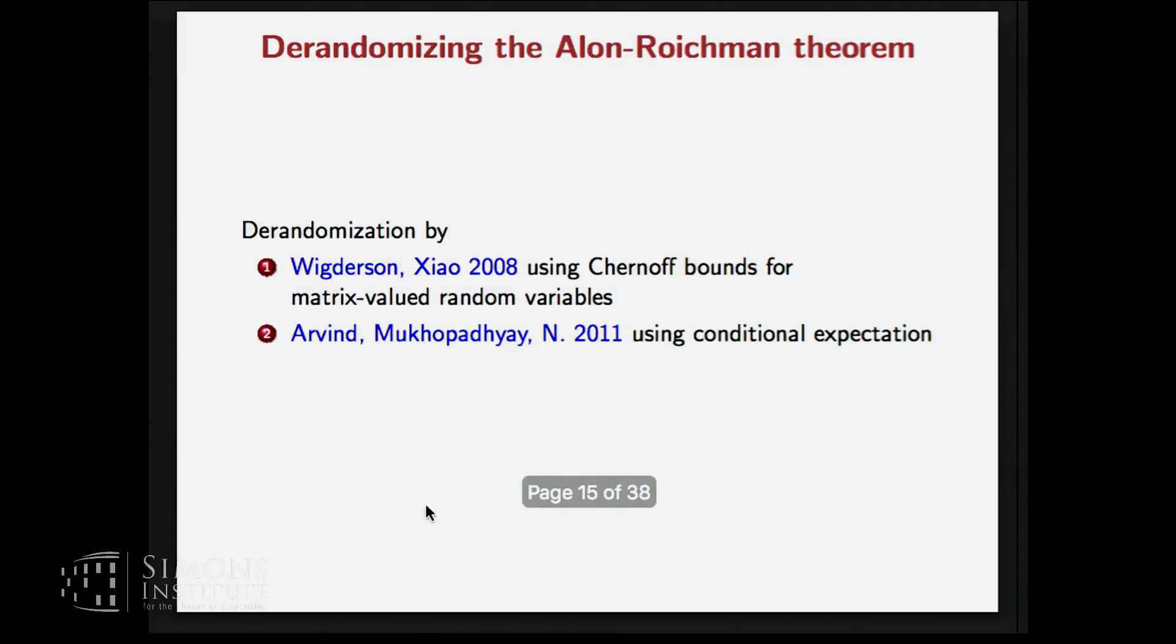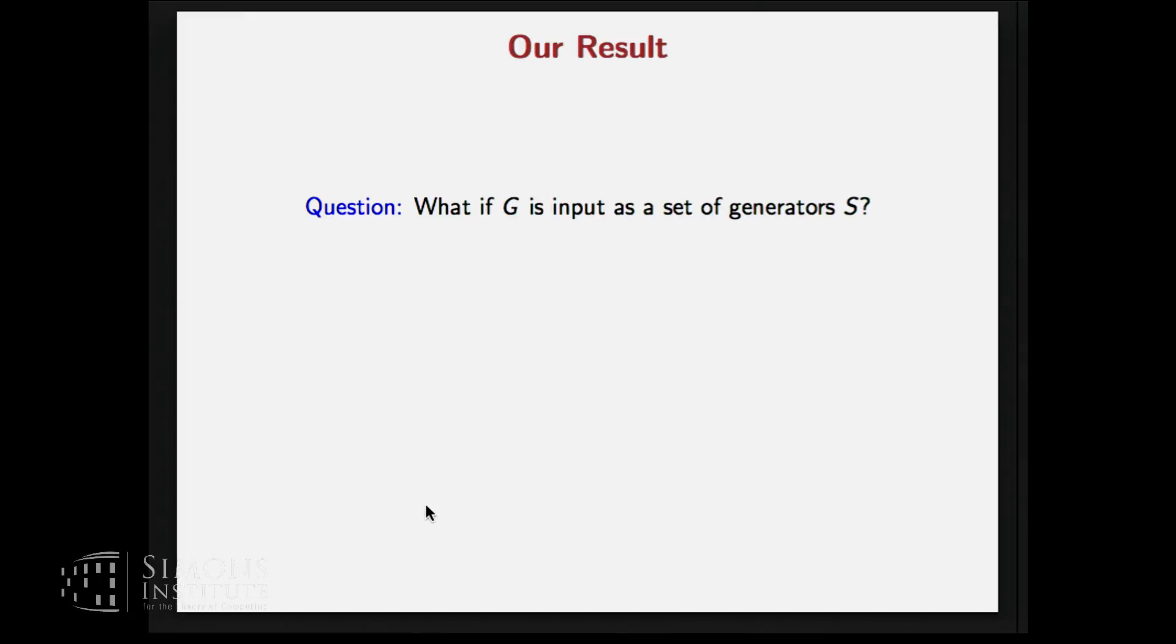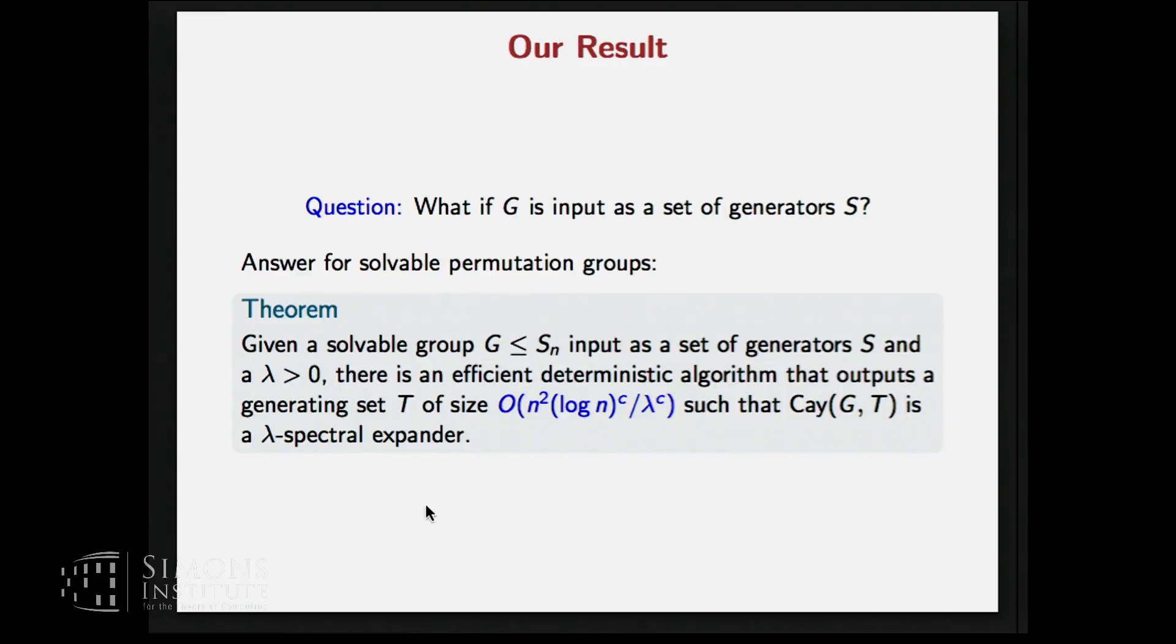So what about derandomization of this? So derandomization is known. There is one derandomization by Wigderson and Xiao which uses Chernoff bounds for matrix valued random variables. We gave another one which uses just conditional expectations. However, the drawback of these is that they both need the group to be given as input in terms of its multiplication table. So this is really wasteful because a group can be much more concisely represented in terms of its generating set and the question we address here is what if the group G is given as a generating set S. Now if this generating set itself is an expanding one, we are done but typically we may not have it. And in that case, can we get another generating set which is expanding?